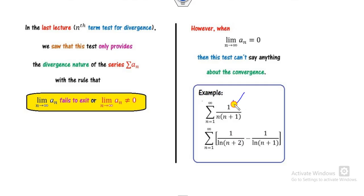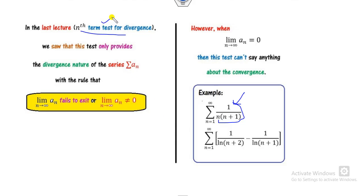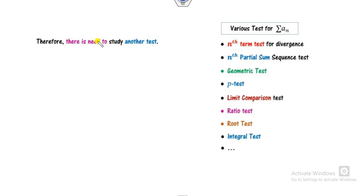For example, if the limit of aₙ as n approaches infinity is zero — and similarly for another example where it gives 0 minus 0 equals zero — using the nth term test on these two examples, this test will never tell us about convergence or divergence. This shortcoming of the nth term test will be overcome by the next test.